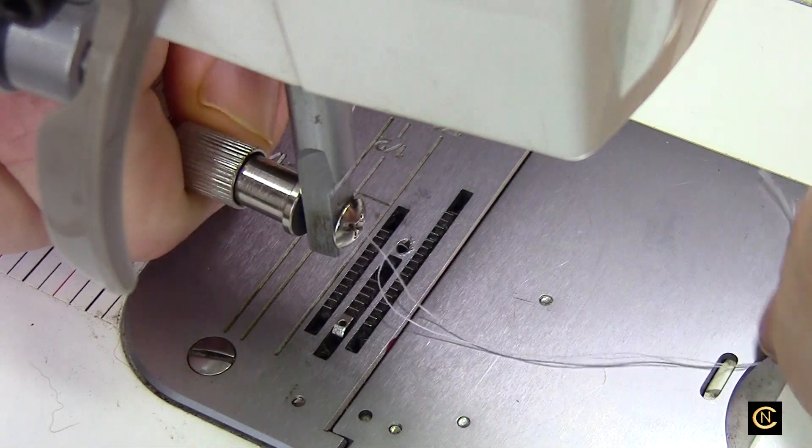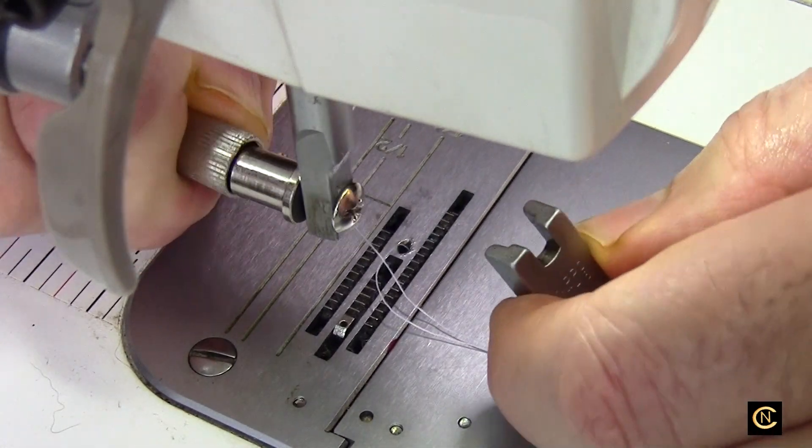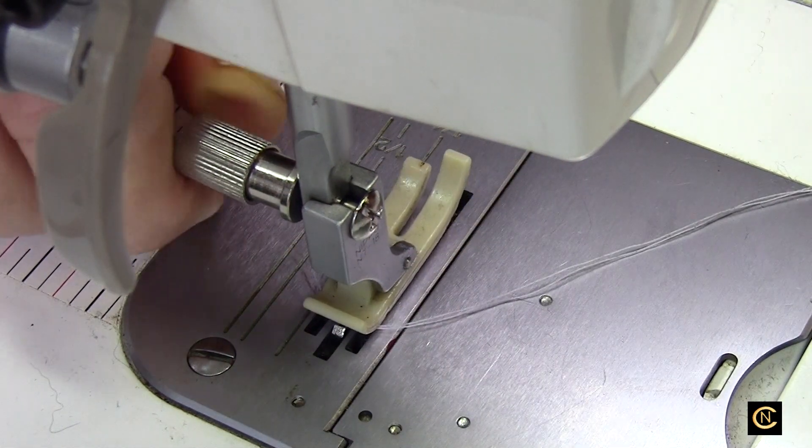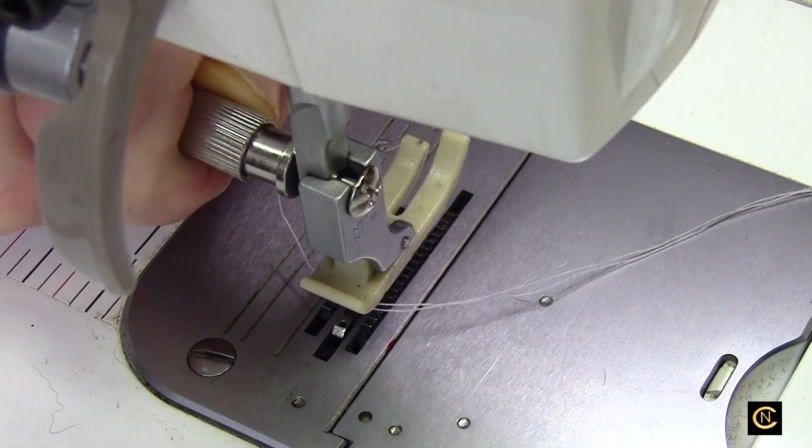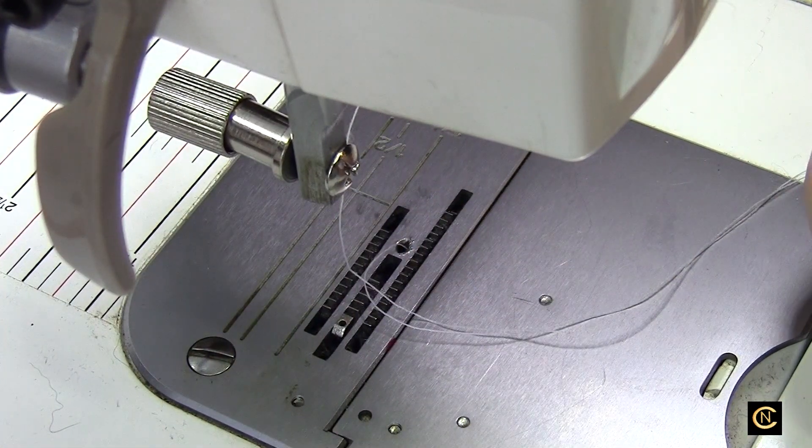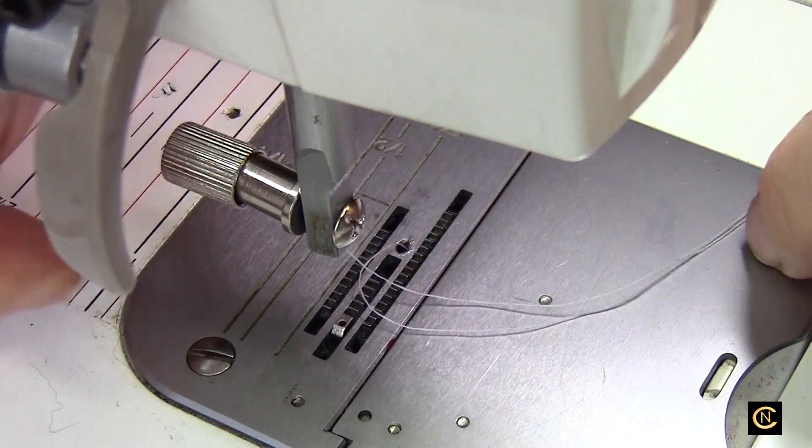Your quick release is pushing that and then it drops and it comes out. You have to make sure your presser foot bar is up really high when you do that. I'm using my knee lifter, lifting it up high, pushing this in.